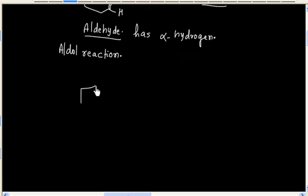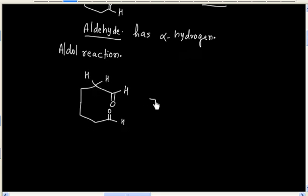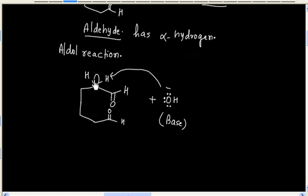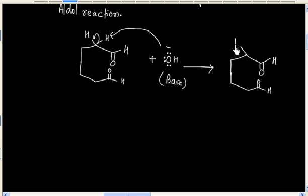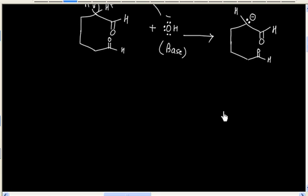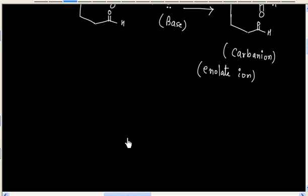In the first step we will have an acid-base reaction, where OH minus will act as a base and it will extract the alpha-hydrogen. Alpha-hydrogens are acidic in nature. And finally a carbanion is generated. This carbanion is also called an enolate ion.